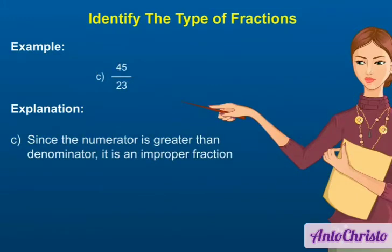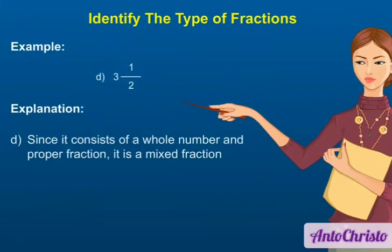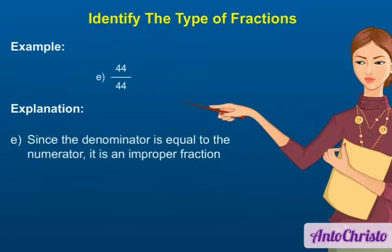C) Since the numerator is greater than the denominator, it is an improper fraction. D) Since it consists of a whole number and a proper fraction, it is a mixed fraction. E) Since the denominator is equal to the numerator, it is a mixed fraction.